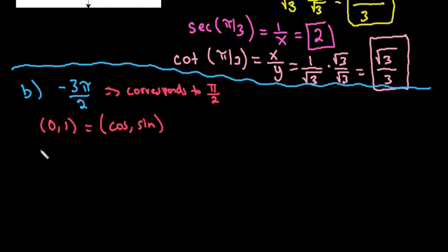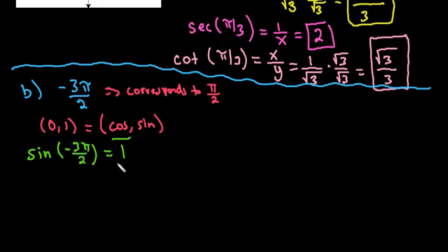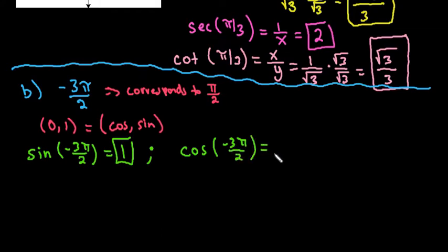For this one, we do have some undefined functions. Let's start with sine — it's easy. Sine of negative 3 pi over 2 is just the y-coordinate, which is 1. Cosine of negative 3 pi over 2 is equal to the x-coordinate, which is 0.